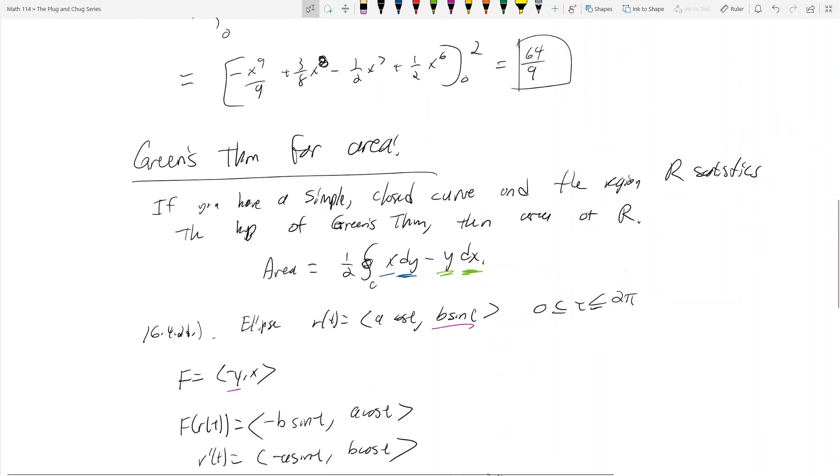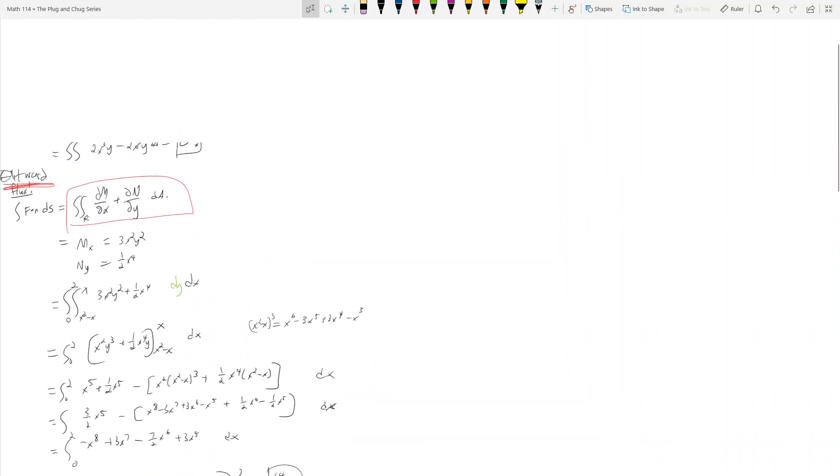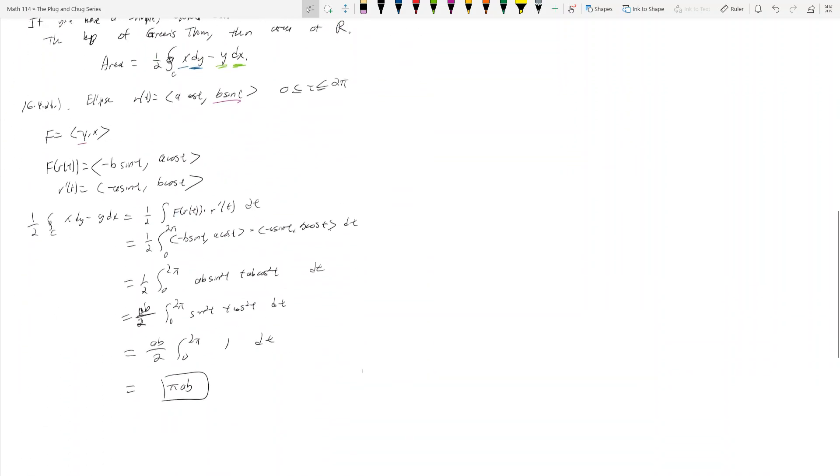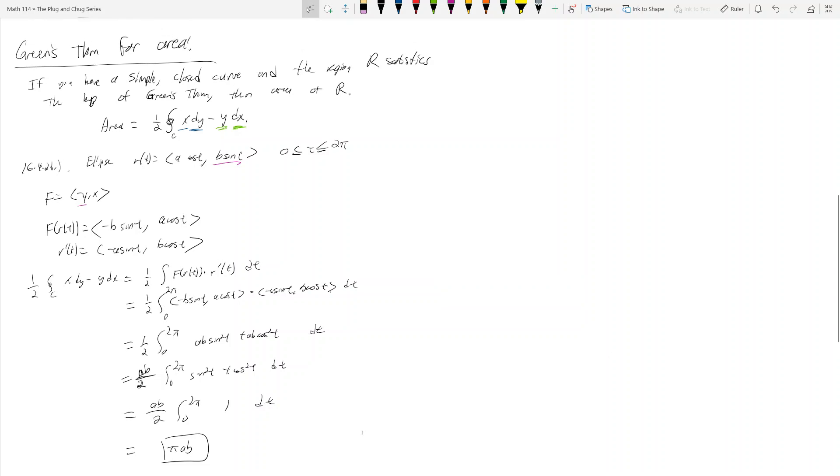So this is how you use Green's theorem for area. I think that's all I'm going to do for Green's theorem then. We did a flow example, a flux example, and now an area example.